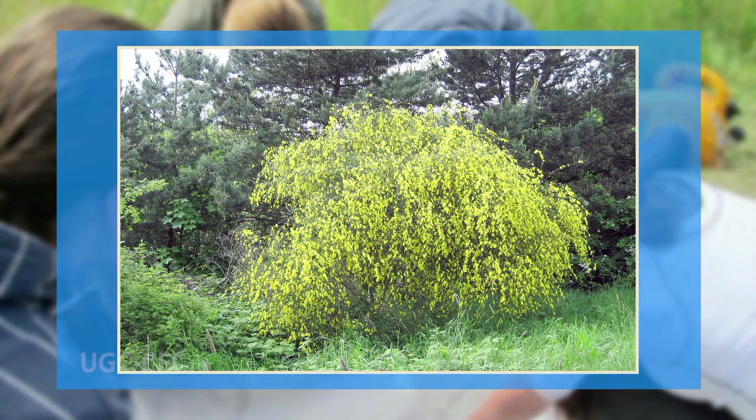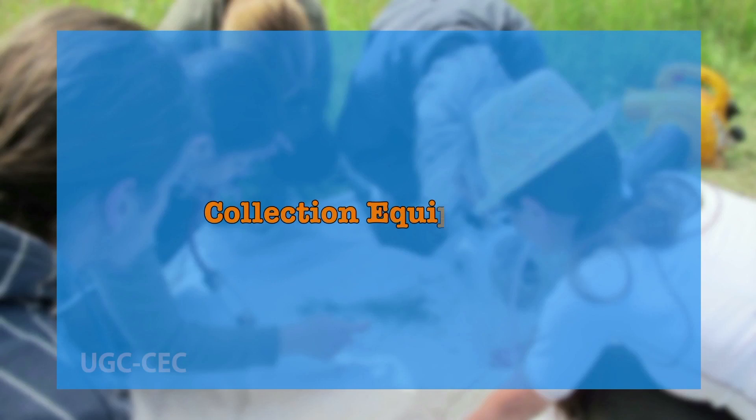Specimens are placed either directly after collection or sometimes after temporary storage in a polythene bag. Trees and shrubs should be collected with both vegetative and flowering shoots to enable the representation of both leaves and flowers. All information concerning the plant should be recorded in the field notebook. It's advisable to collect a few specimens of each species from the site to ensure that reserve specimens are available if one or more get destroyed, and also to ensure that duplicates can be deposited in different herbaria when finally mounted on sheets.